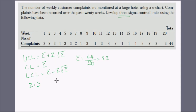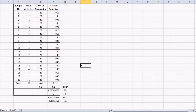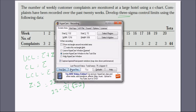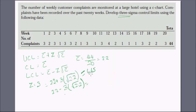The average number of complaints, C-bar, equals 44 divided by 20, which is 2.2. The upper control limit is 2.2 plus 3 times the square root of 2.2, and the lower control limit is 2.2 minus 3 times the square root of 2.2. The upper control limit comes out to approximately 6.65, and the lower is negative, so we set it to zero. With these values we can draw the control chart.